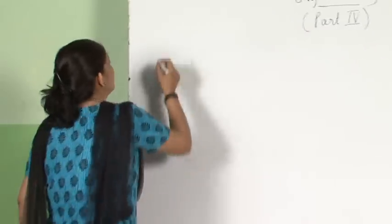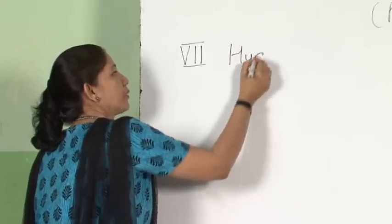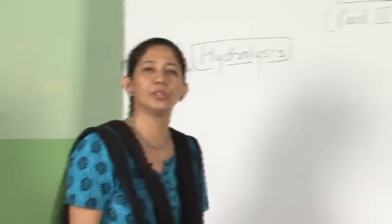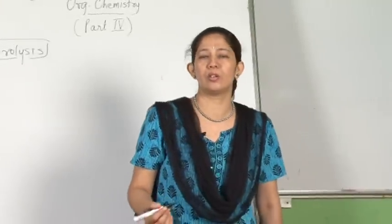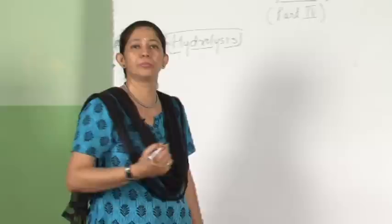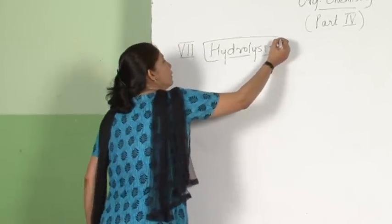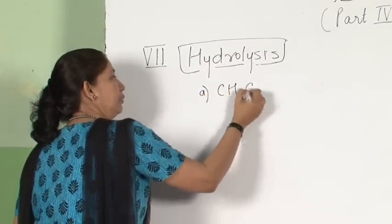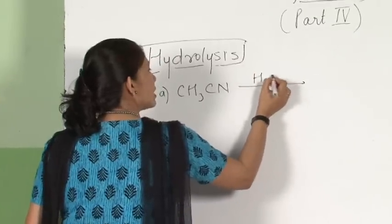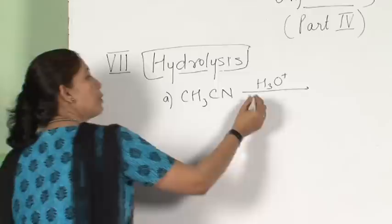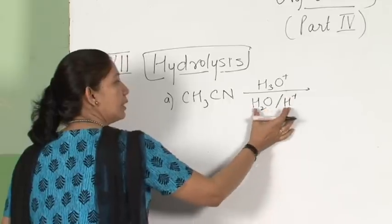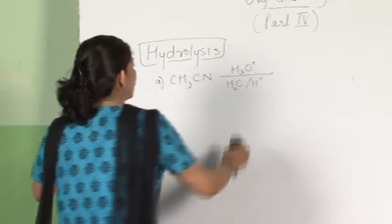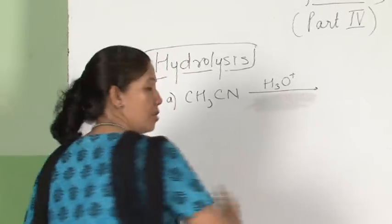Now let me start with one more reaction: hydrolysis. Hydrolysis means reaction either with water in the presence of an acid — acid hydrolysis — or in presence of a base — basic hydrolysis. Sometimes hydrolysis is also specified as NaOH. If I take a cyanide and perform hydrolysis, I write it as H3O+.